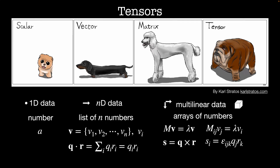The first tensor of rank greater than 2 you're likely to encounter comes in the definition of the cross product. Consider the cross product s = q × r. The i-th component of s equals ε_ijk times q_j times r_k, where ε is the totally anti-symmetric tensor equal to 1 when ijk is an even permutation of 1,2,3, minus 1 when ijk is an odd permutation of 1,2,3, and 0 in all other cases. In my research, we deal with the rank-4 elastic constant tensor c_ijkl. General relativity has a rank-4 Ricci curvature tensor.